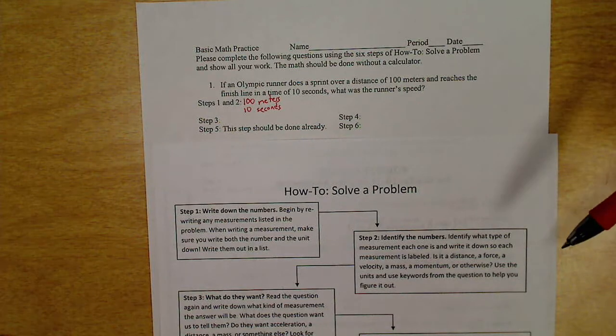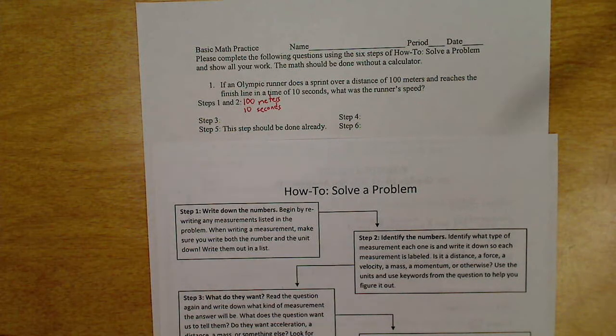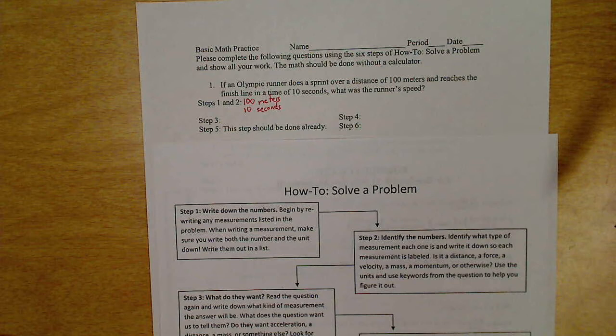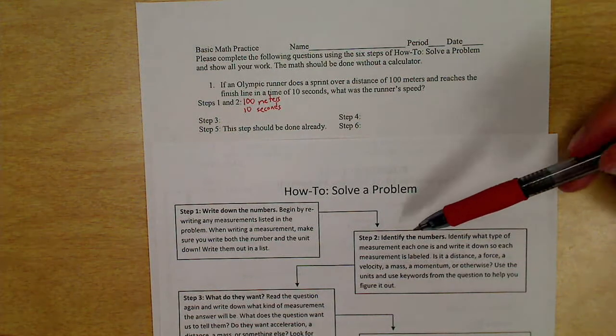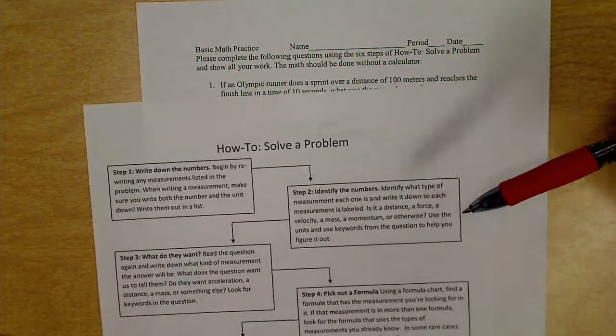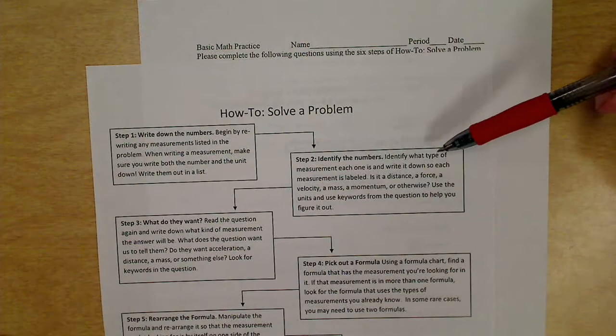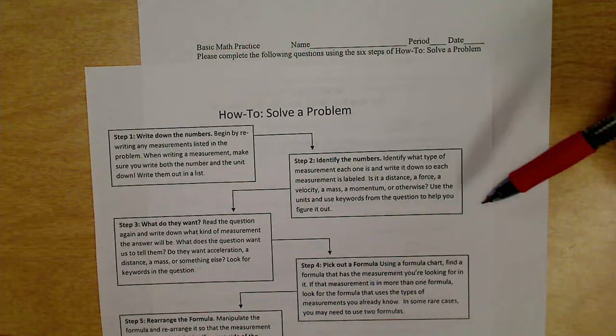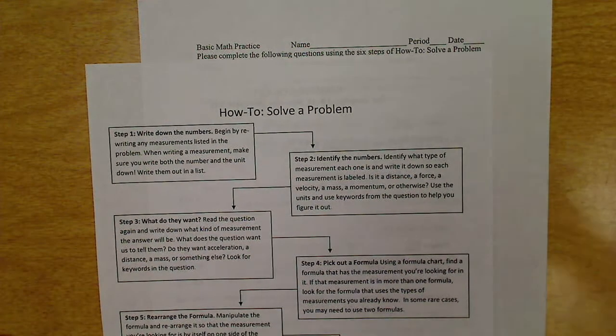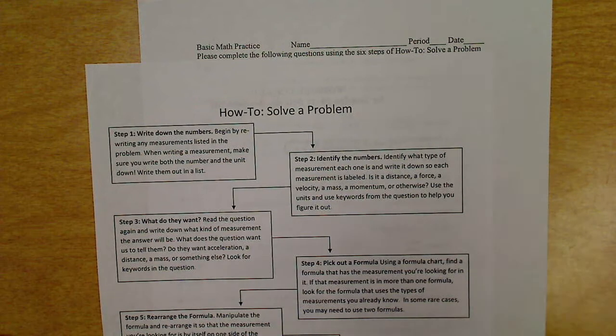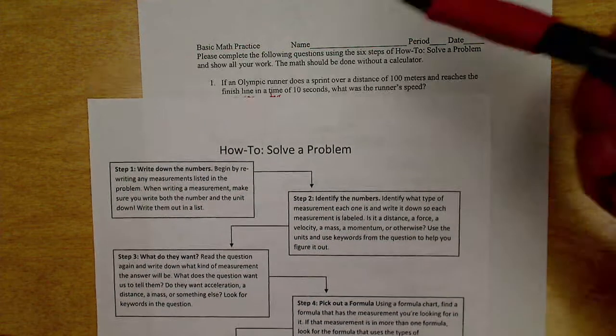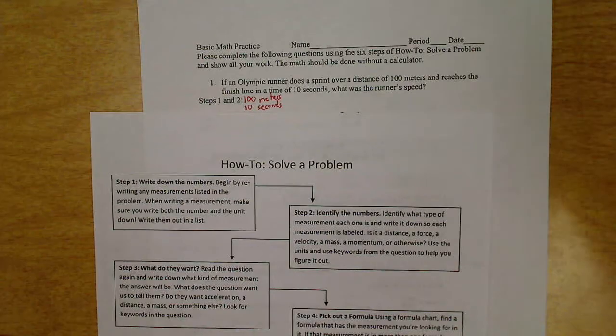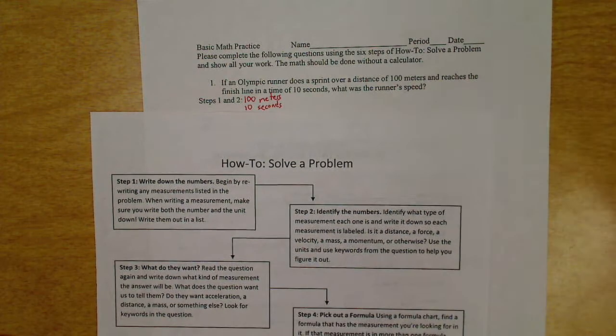Our step two, step one was the easiest step. Step two is the most difficult. In step two, we're identifying the numbers. Identify what type of measurement each one is and write it down so each measurement is labeled. Now, this might be the most difficult step, but it is multiple choice. Meaning, 100 meters defines something. It's a type of measurement. It's measuring something.